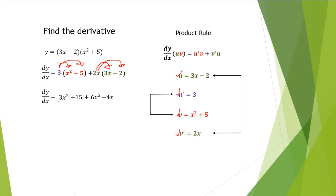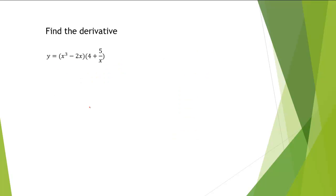Next we'll combine like terms, and we have a final result of 9x squared minus 4x plus 15. Let's take a look at another example. Here we're asked to find a derivative for x cubed minus 2x times the quantity 4 plus 5 over x.